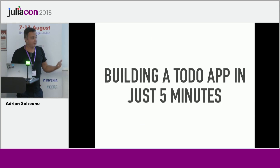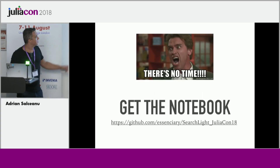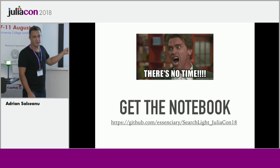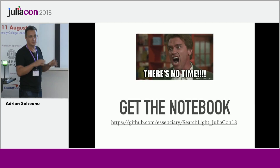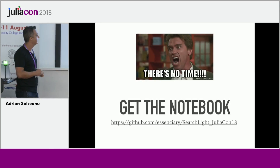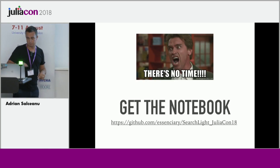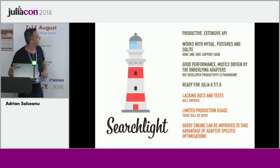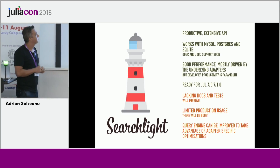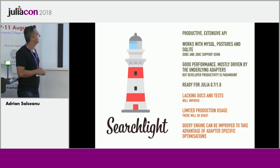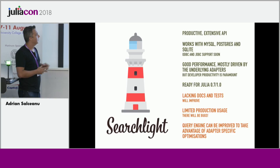I have a Jupyter notebook I wanted to show but there's no time, so you can go get it — it shows everything, presents the API, and shows how to build an app with Searchlight, covering all the important things. Current status: it works, I've been using it in my projects, it has good coverage for backends, performance is okay, and it works with Julia 0.7 and Julia 1. Still lacking some docs and tests which I will try to improve.